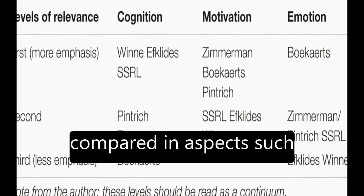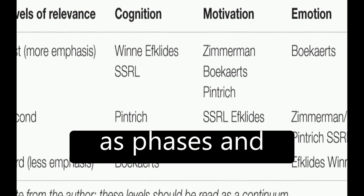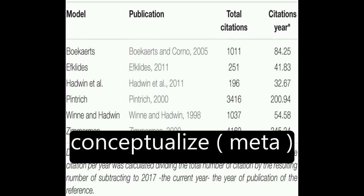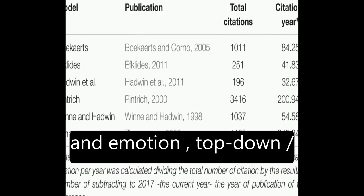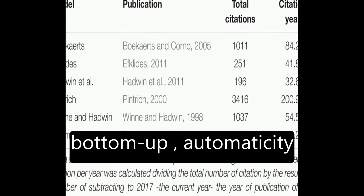The models are then compared in aspects such as phases and subprocesses, how they conceptualize metacognition, motivation and emotion, top-down versus bottom-up processes, and automaticity.